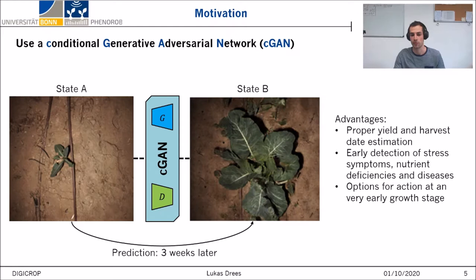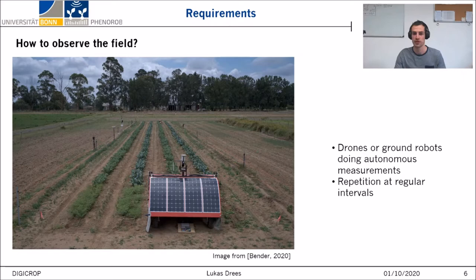In summary, the idea is to provide farmers with useful information and thus options for action at a very early stage. The basic requirement for this is the georeferenced observation of the field at different times with an imaging sensor.